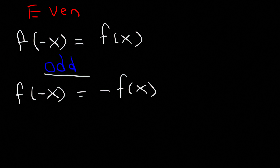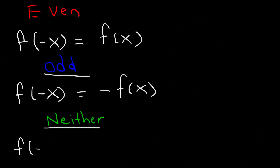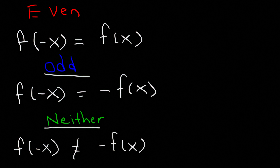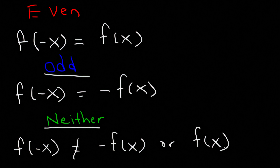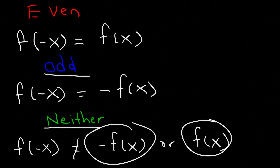Now what about the last category? When is a function neither even nor odd? It's going to be neither if you plug in negative x and you do not get negative f of x. If some signs change while others don't, then it's neither. Also, if it doesn't equal f of x either, it's neither. So basically, as long as it's not even or odd, it's neither.